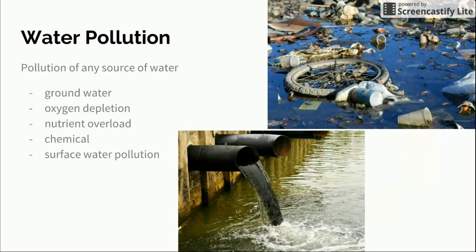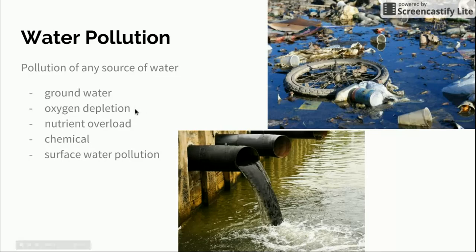Water pollution is pollution of any type of water source, such as groundwater. This includes oxygen depletion — oxygen being removed from the water — nutrient overload where there are too many nutrients, perhaps from fertilizers being dumped in, any other type of chemical, and surface water pollution as well. Here are some examples of water pollution.